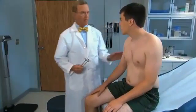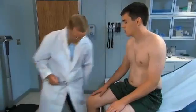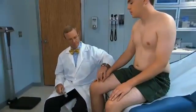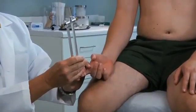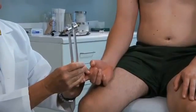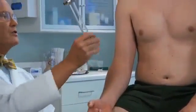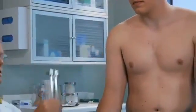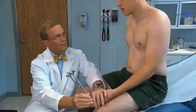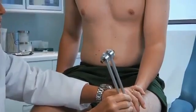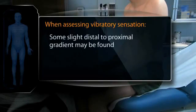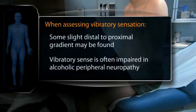Next, assess vibratory sensation using a lightly vibrating, low-pitched tuning fork. Have the patient close his eyes. Tap the tuning fork on the heel of your hand and place it against the soft distal tissue of the finger and large toe, asking the patient to tell you what he feels and when the sensation stops. Then move the tuning fork closer to the trunk to see if it is perceived. Even in normal patients, some slight distal-to-proximal gradient may be found. Vibratory sense is often impaired in alcoholic peripheral neuropathy.